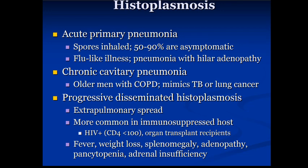Some patients will develop a self-limited flu-like illness — fevers, maybe a cough for a couple of days — but they'll get over it because the immune system is able to take care of it. About 50 to 90 percent of patients are asymptomatic. But there are individuals who will go on to develop an acute primary pneumonia.